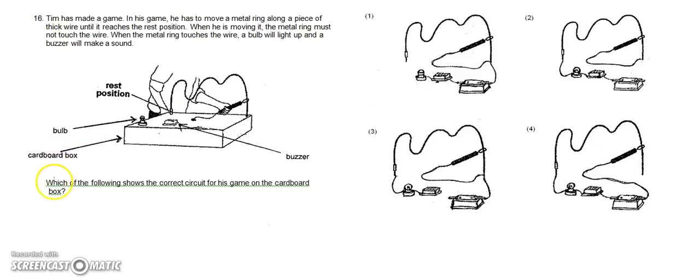So the question is, which of the following shows the correct circuit for his game on the cardboard box? So let's take a look at these four circuits given here. If you look at option number one,